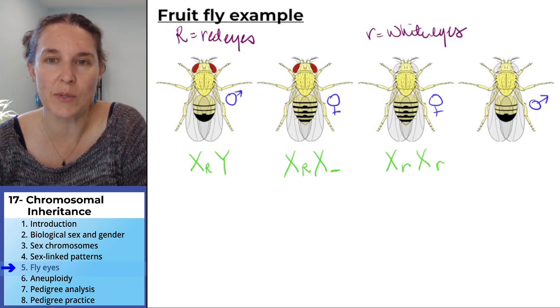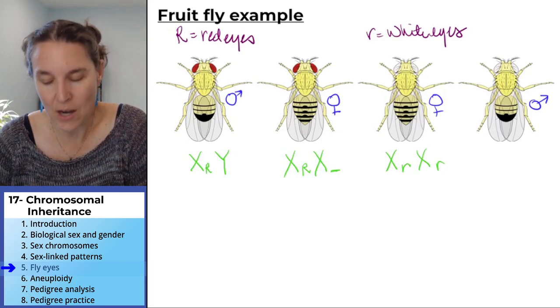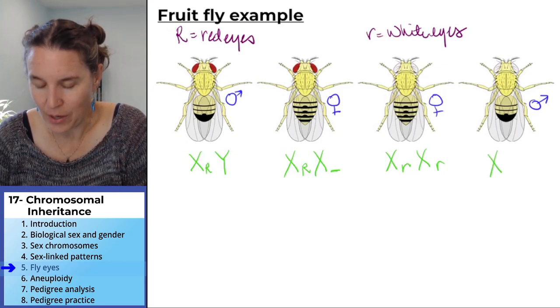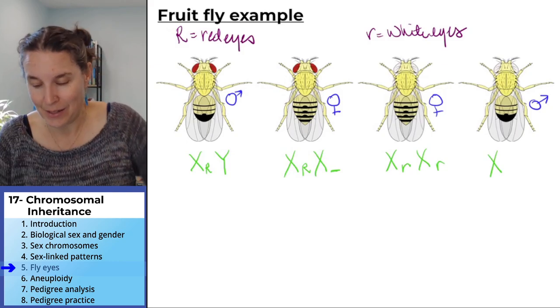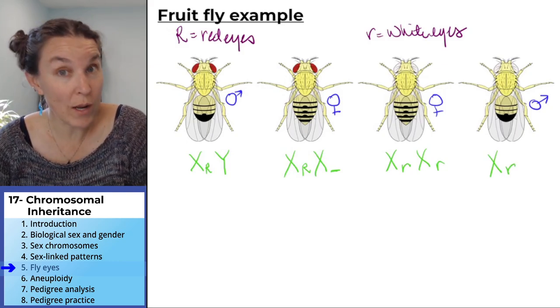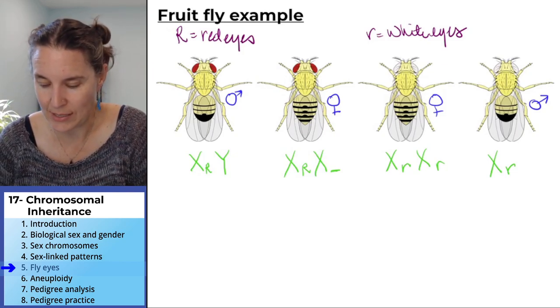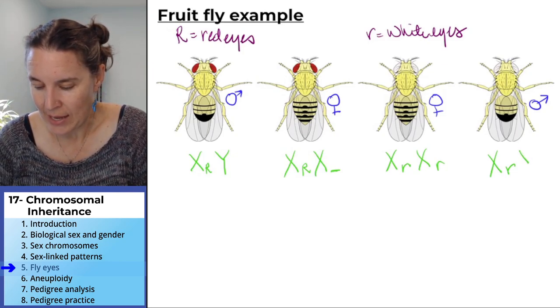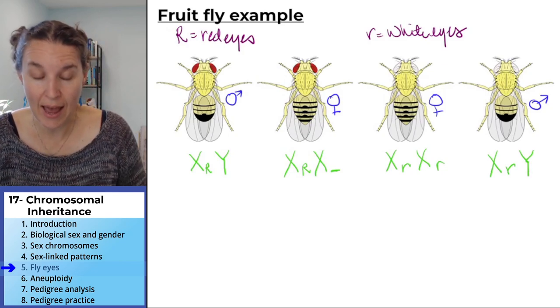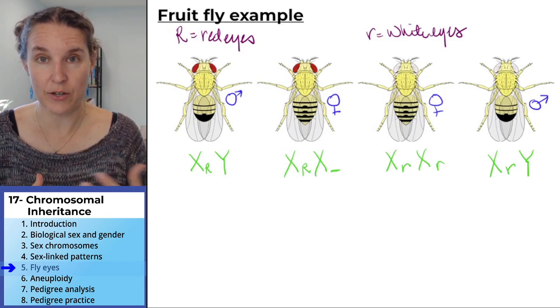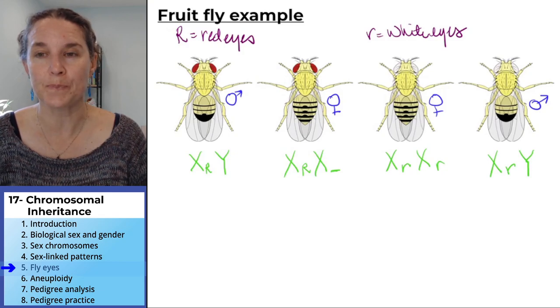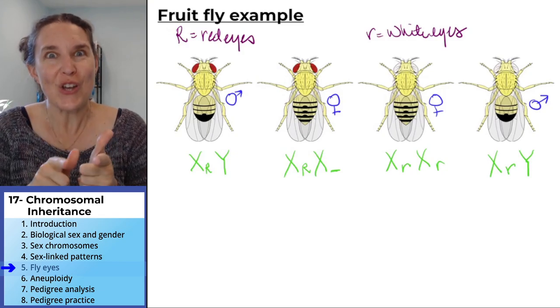And then our white-eyed dude over there, he has to have one copy. His X chromosome has to have that white-eyed recessive allele, and in order to have the male characters he has to have a Y chromosome.